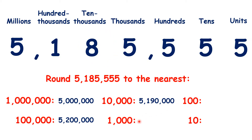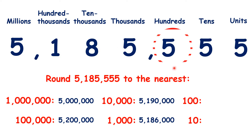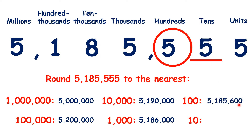Now to the nearest thousand, we find the place value, look to the right, and we round up to 5,186,000. To the nearest hundred, we find the place value, look to the right, and we round up to 5,185,600.